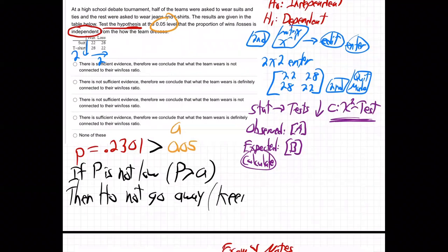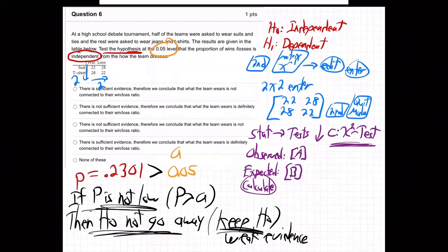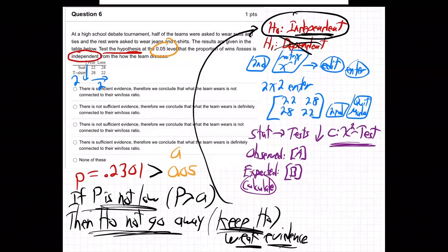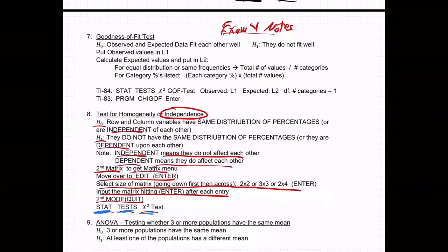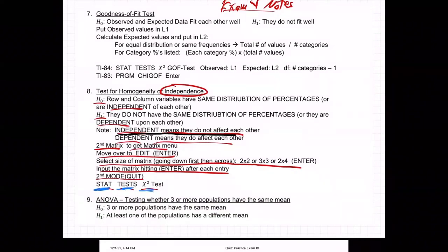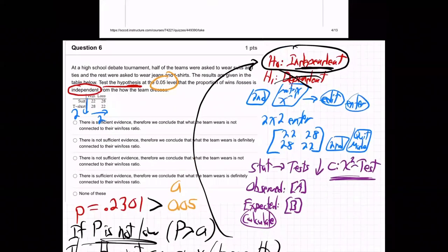In other words, keep H0, and that means weak evidence. Remember that? So you want to have that somewhere in your notes. You want to be really clear on that phraseology. If P is not low, then H0 does not go away. We keep H0. So we're keeping H0. Let's come up here. We're keeping H0, which means what? We believe they're independent, but there's weak evidence. And what does independent mean? Let's go down and make sure we're clear here from the notes. Independent means they do not affect each other.